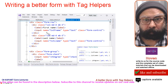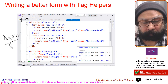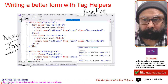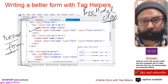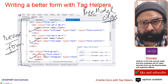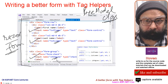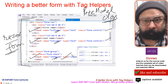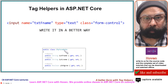In our last tutorial we discussed this HTML form — this Razor form. We posted this form to our page model class, and this form had three input tags: one for the first name, one for the last name, and one for a checkbox. Today we will see that there is a better way of writing these input tags.